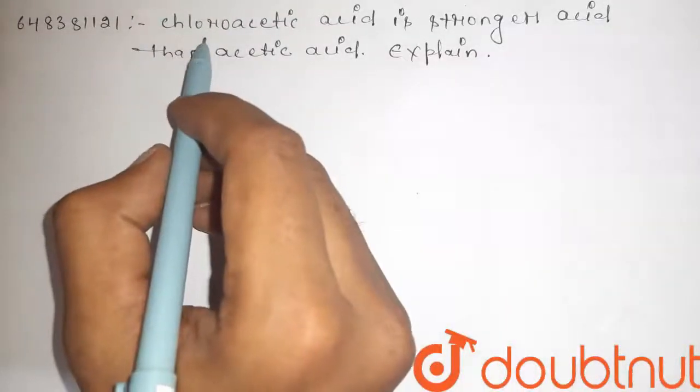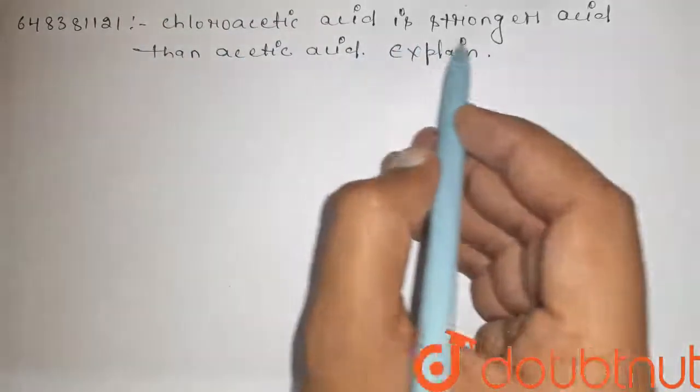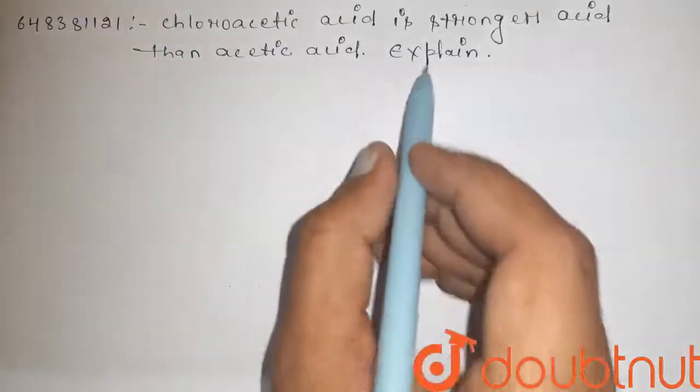Hi guys, here is the question. Chloroacetic acid is stronger acid than acetic acid explain.